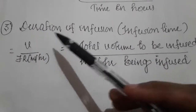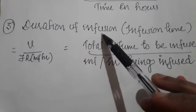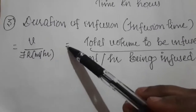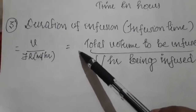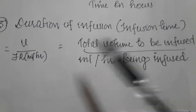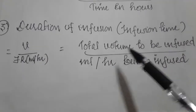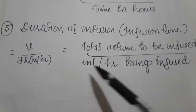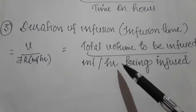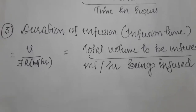The third formula is duration of infusion. If we want to calculate infusion time, the formula is V divided by flow rate in mL per hour. That is, total volume to be infused divided by the flow rate in milliliter per hour. If you know these formulas, the calculation will be easy.